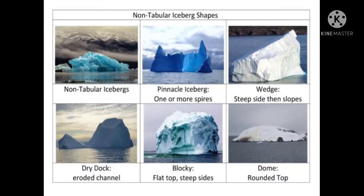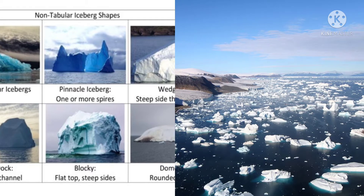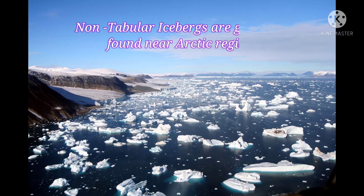Non-tabular icebergs may have different shapes. They may be dome-shaped, pinnacle-shaped, wedge-shaped, dry-dock-shaped, or blocky-shaped. They are generally found in the Arctic region.